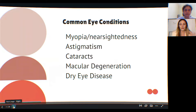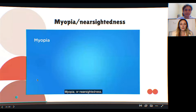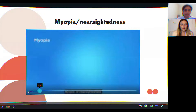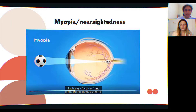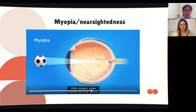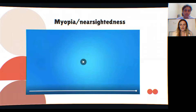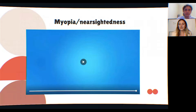The first common eye condition is myopia, or nearsightedness. With myopia, the distance between the cornea and retina is too long, so light rays focus in front of the retina instead of on it. Close objects look clearer but distant objects appear blurred. It can be corrected with glasses, contact lenses, or LASIK surgery.